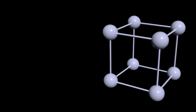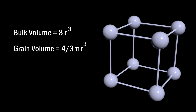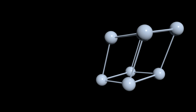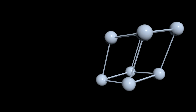Number four: mode of packing. In the case of cubic packing, bulk volume equals the side of the cube to the power of three, so V-bulk equals (2r)³ equals 8r³. Grain volume equals the volume of a sphere; the cube contains eight spheres, each contributing one-eighth of its volume, so V-grains equals (4/3)πr³. Since V-bulk equals V-grains plus V-pores, we get V-pores equals V-bulk minus V-grains. Dividing V-pores by V-bulk, the radius cancels and porosity equals 47.6 percent. Repeating the same steps with a rhombohedral system, porosity equals 39.5 percent. Each mode of packing has its unique porosity value.